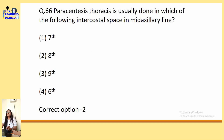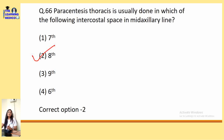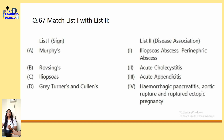Paracentesis thoracis is usually done in which intercostal space of the mid-axillary line? It is done in the 8th intercostal space. This question is also from AIPJT 2023 with the same options.